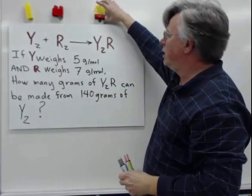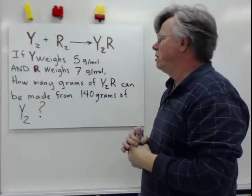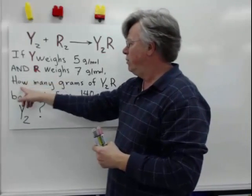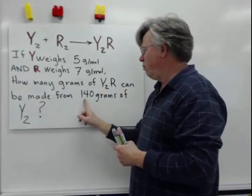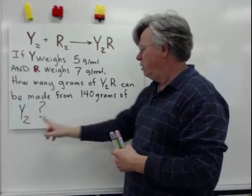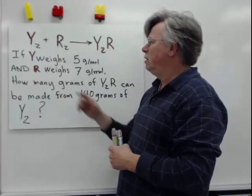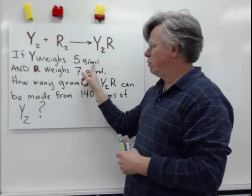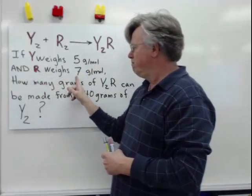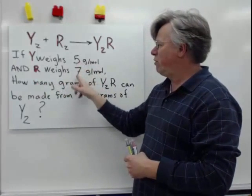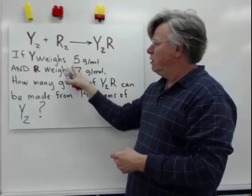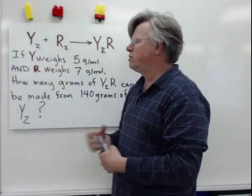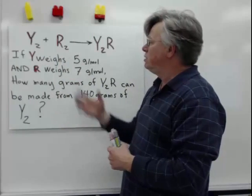The mega blocks form Y₂R here. The only information you need to solve a problem like this — how many grams of Y₂R can be made from 140 grams of Y₂ — is the mass of Y: 5 grams per mole, and the mass of R: 7 grams per mole. This is the information you'd find on the periodic table. Y and R are not real elements, but they serve as examples.